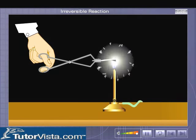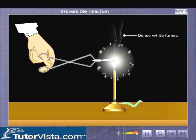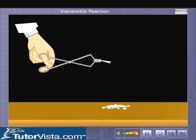The ribbon starts burning with a dazzling light and produces dense white fumes. The white fumes on cooling form a white powder of magnesium oxide.